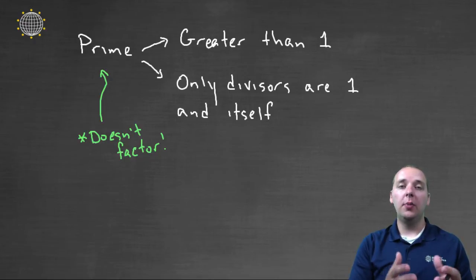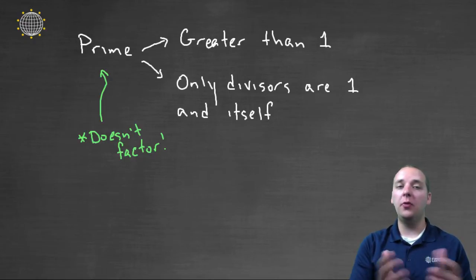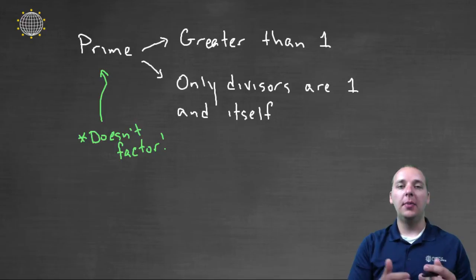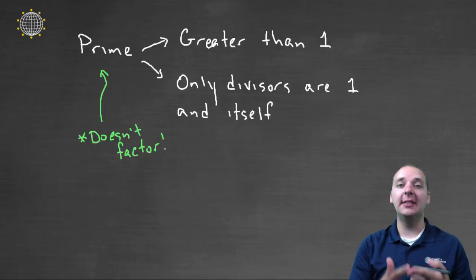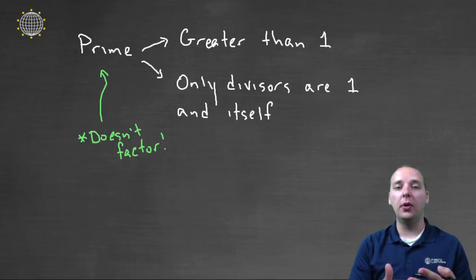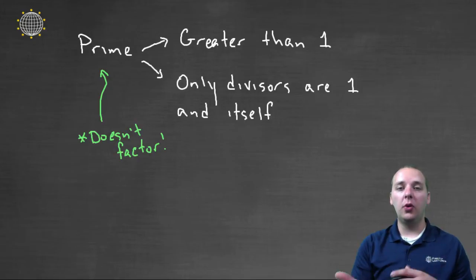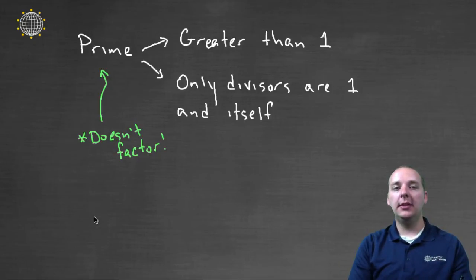In other words, your number doesn't factor. So twelve would not be considered prime because it has a divisor like six, and three, and four — other than one and itself. So what would be an example of a prime number?